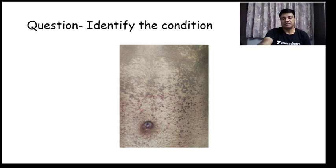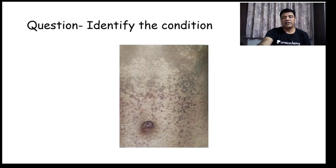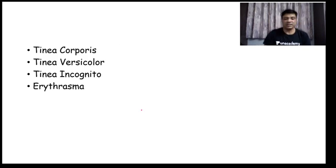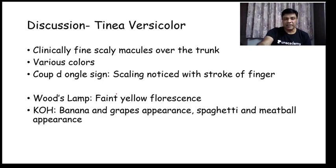Next question: identify the condition. Choices are Tinea corporis, Tinea versicolor, Tinea incognito, and Erythrasma. The correct answer is the patient has Tinea versicolor. Corporis is dermatophytosis of the body; incognito is when steroids are applied on a tinea lesion and itching is masked. Erythrasma is another infection caused by Corynebacterium minutissimum. Tinea versicolor is seen as fine scaly macules over the trunk.